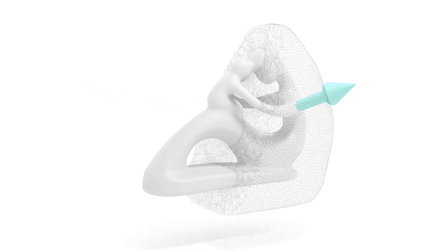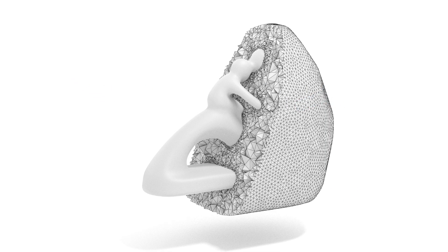Then, we tetrahedralize the volume surrounding the object. This will be the mold volume. We partition the external boundary of the volume according to the extraction directions.